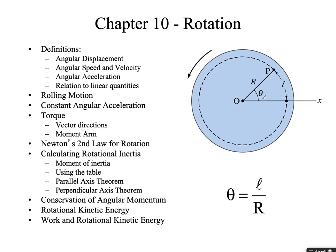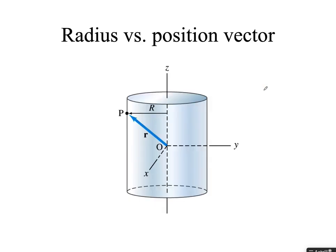Just remember the definition of radians is the arc length — represented by script L — divided by the radius R, and that'll tell you the angle in radians. If you've got an origin at the middle and a radius vector that points out to point P, this position vector is not the equivalent to the radius vector for a rotating object. The radius vector is just from the axis to where that point is.